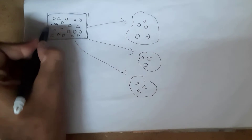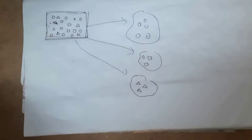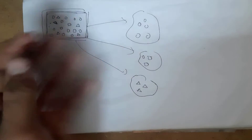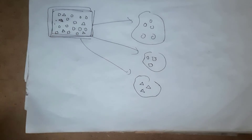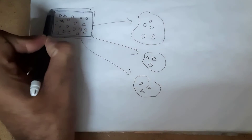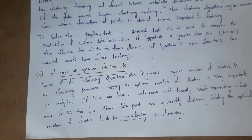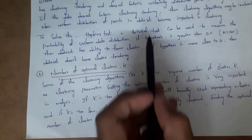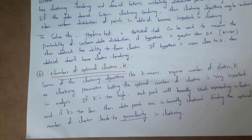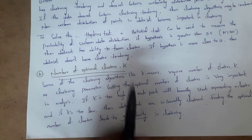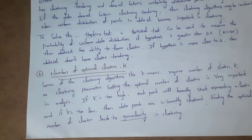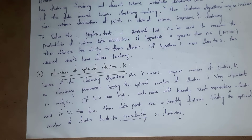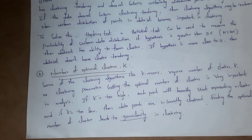But if the dataset does not have clustering tendency, then it cannot uniformly distribute data objects, it cannot distribute objects correctly, and the clustering algorithm will not work. To identify clustering tendency, we use the Hopkins test — it is a statistical test used to measure the probability of uniform data distribution. If we get a hypothesis greater than 0.5, then the dataset has the ability to form clusters. But if the hypothesis is more close to 0, then the dataset does not have clustering tendency.